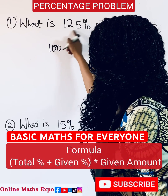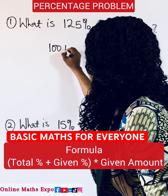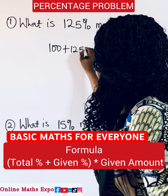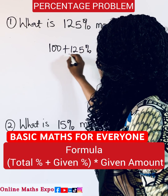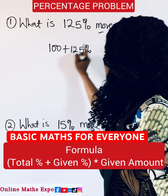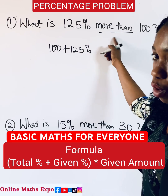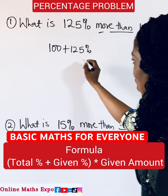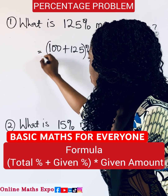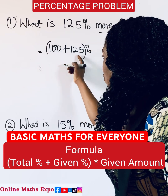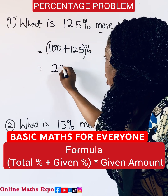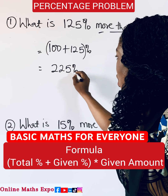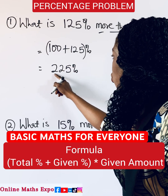So it has 125 percent, and you are adding because it's 'more than.' I hope that's clear. So when you add this, what will it give you? It gives you 225 percent.